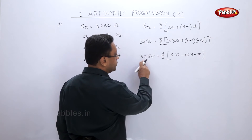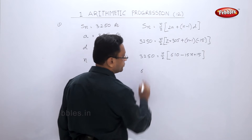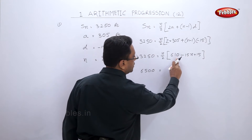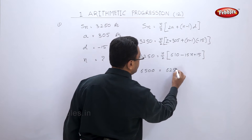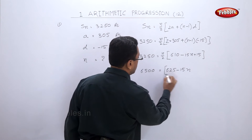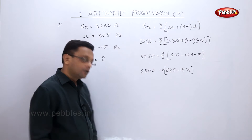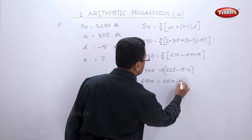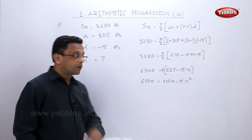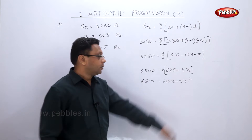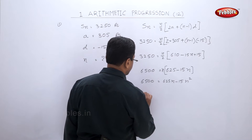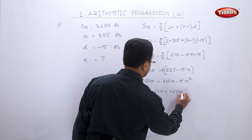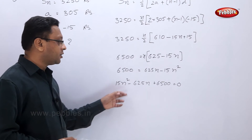Simplifying further, we multiply both sides by 2: 6500 = (610 + 15 − 15n) × n, giving 6500 = 625n − 15n². Rearranging, we get the quadratic equation 15n² − 625n + 6500 = 0. We can simplify this further by dividing by 5.